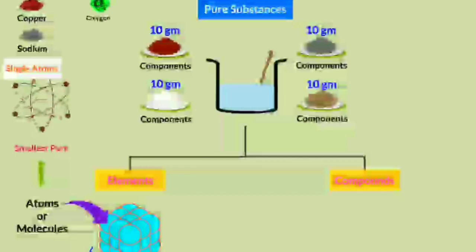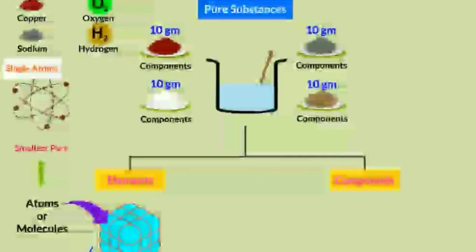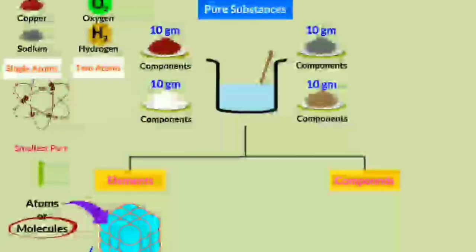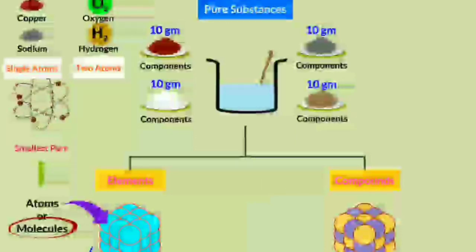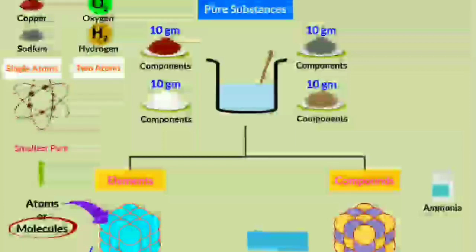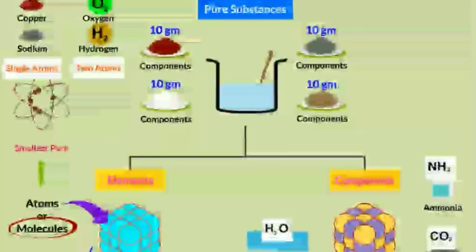When atoms of different elements combine, they form a compound. Water, ammonia, and carbon dioxide are all examples of compounds.